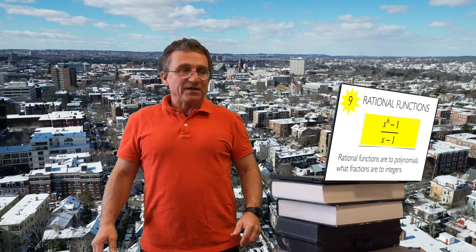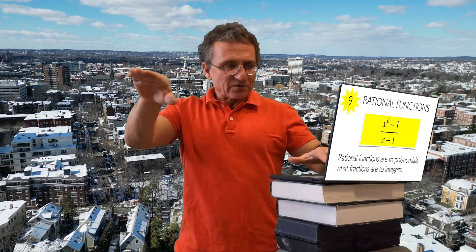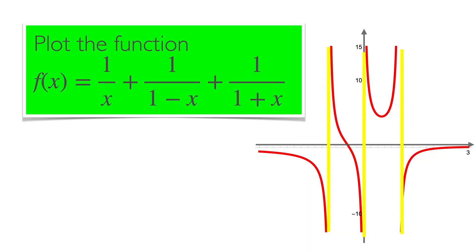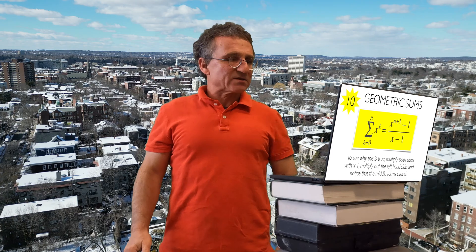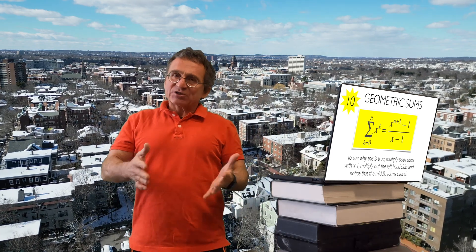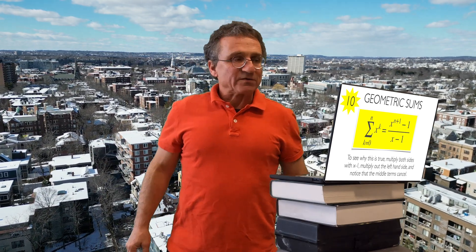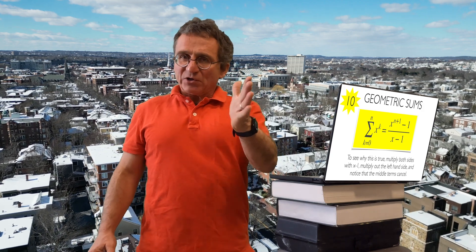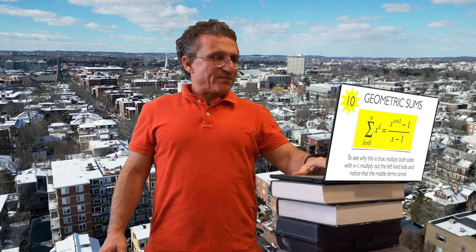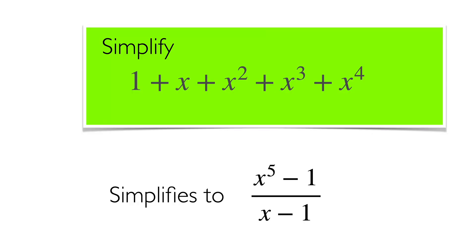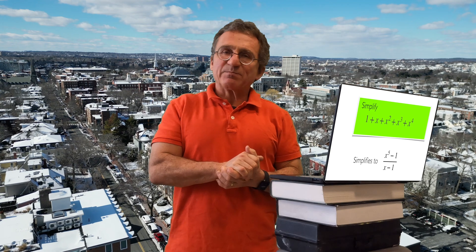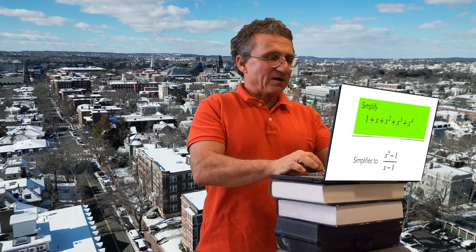Rational functions play an important role too — they are polynomials over polynomials. What can happen is that we have poles, places where the function is not defined, which appear as vertical asymptotes and are useful for drawing the function. Geometric sums naturally lead to rational functions. For example, adding powers of x — x plus x squared plus x cubed plus x to the fourth — simplifies to x to the five minus one over a rational expression.